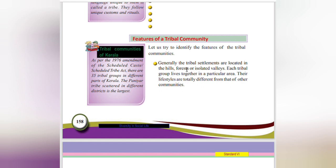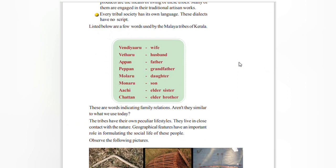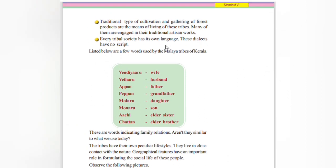Generally, tribal settlements are located in the hills, forests, and isolated valleys. Each tribal group lives together in a particular area. Their lifestyles are totally different from that of other communities. They practice traditional types of cultivation and gathering. Many of them are engaged in traditional artisan work. Every tribe has its own language.